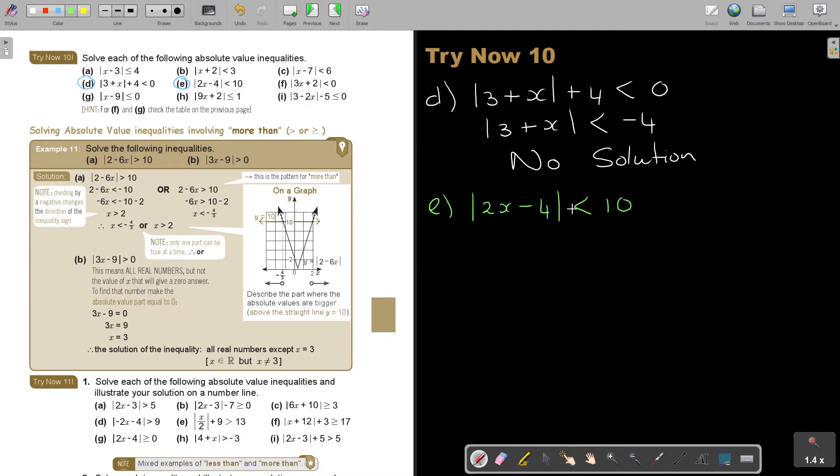It goes 2X minus 4, and this is also smaller than 10. Now remember, I think all of them, these are smaller and equal. So if it's smaller, just run all the way with smaller. If it's smaller and equal, run all the way with smaller and equal. But for now, because it's smaller, less than, I just go and I say 2X minus 4. And now, think of your number line.